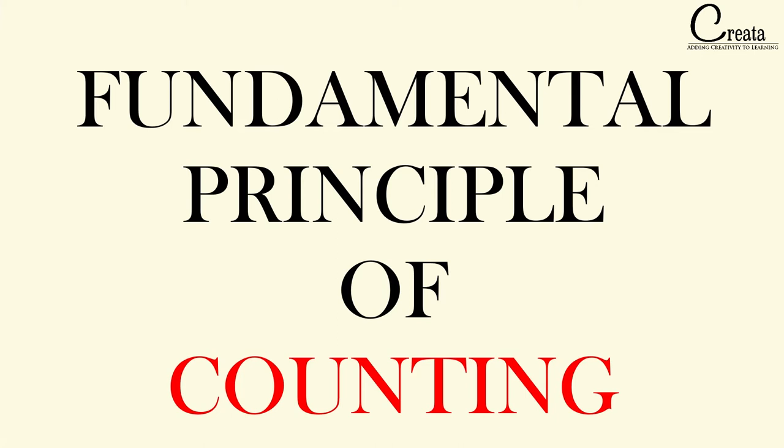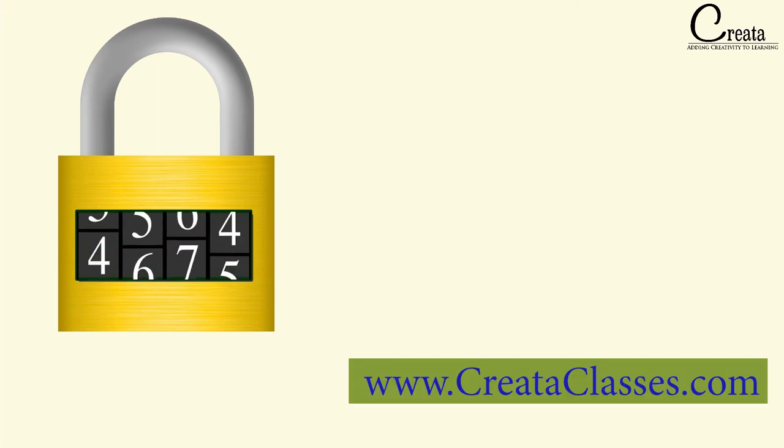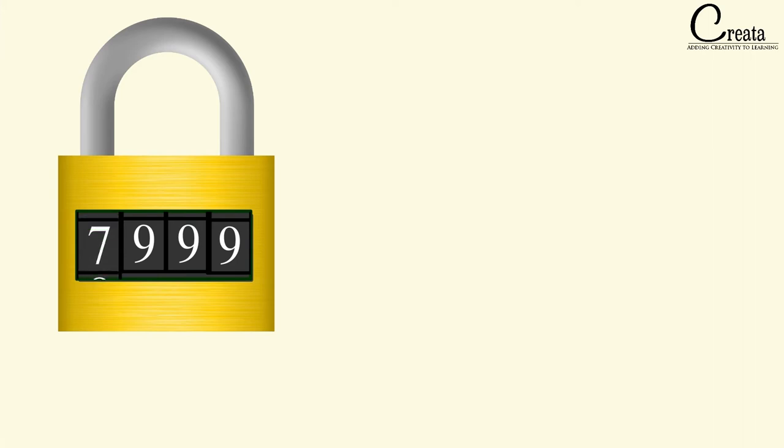Let's begin this lecture with an example. Suppose we are having a number lock of 4-digit combination — 4-digit numbers are required to open this lock. We forget the password to open this lock, but we remember only the second digit, that is 3. The rest 3 digits — the 1st, 3rd and 4th — we forget. The question is: in order to open the lock, how many sequences of 3 digits you may have to check?